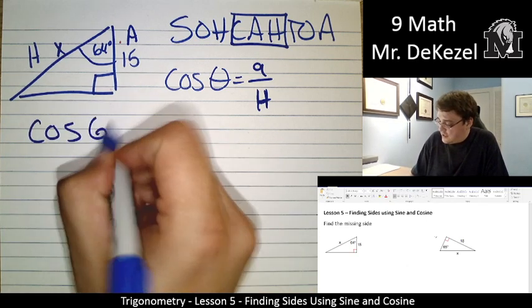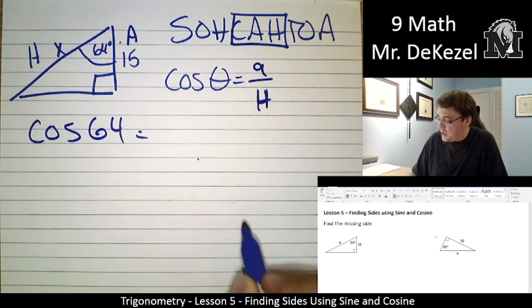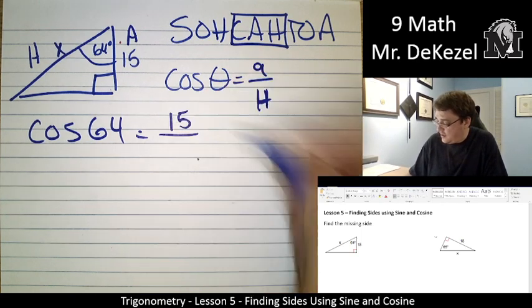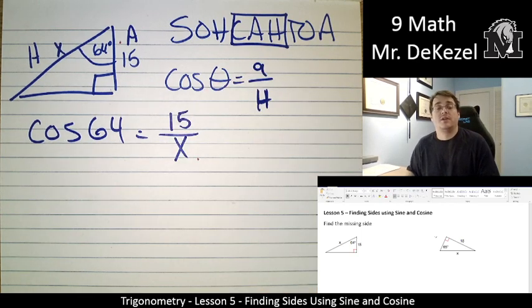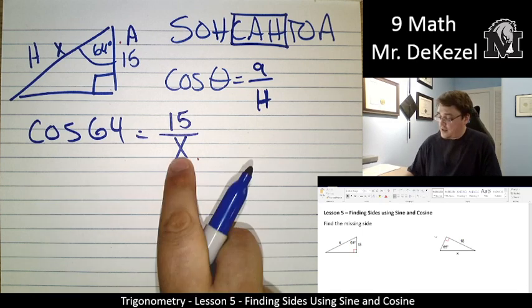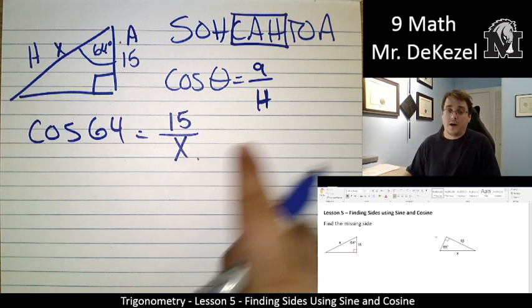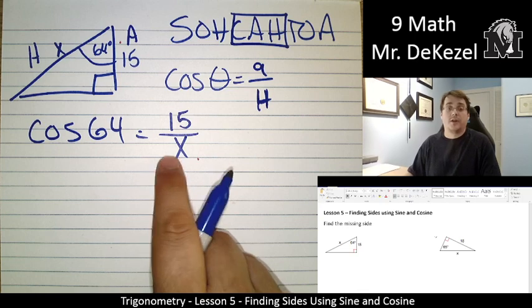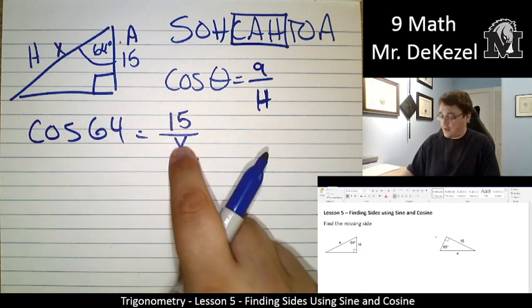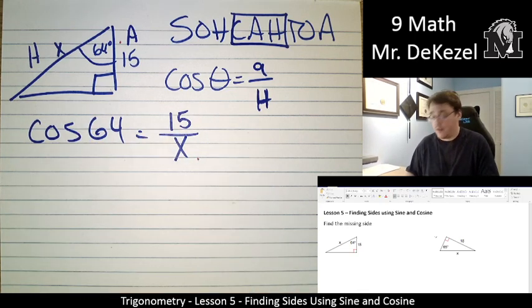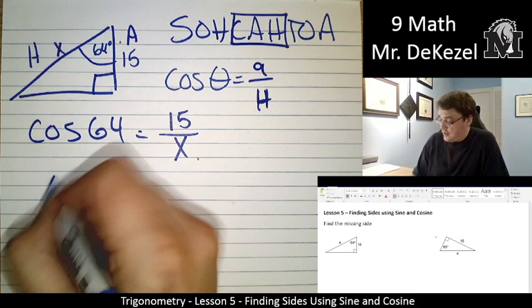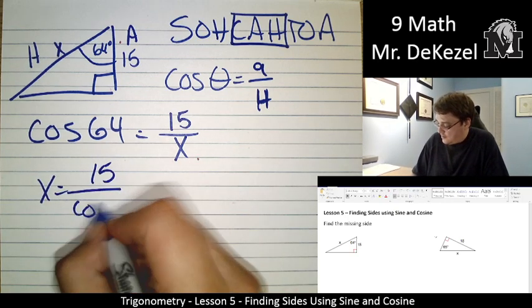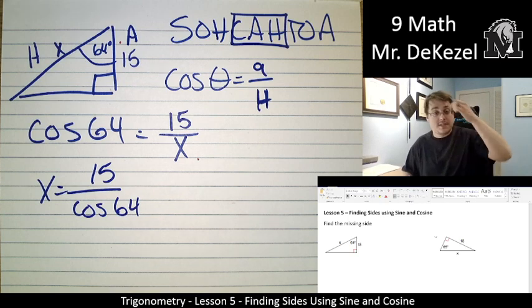Cosine of 64 is equal to the adjacent side, we said was 15, and the hypotenuse is the unknown, that's X. When it is on the bottom, the unknown is on the bottom, we are going to flip that around with what is on the top on the other side. What we end up with is X is equal to 15 divided by the cosine of 64.